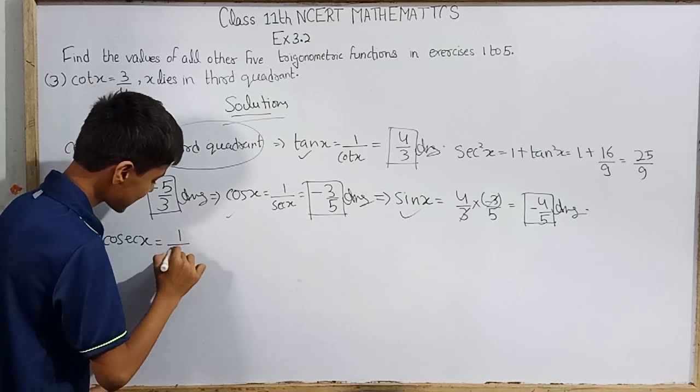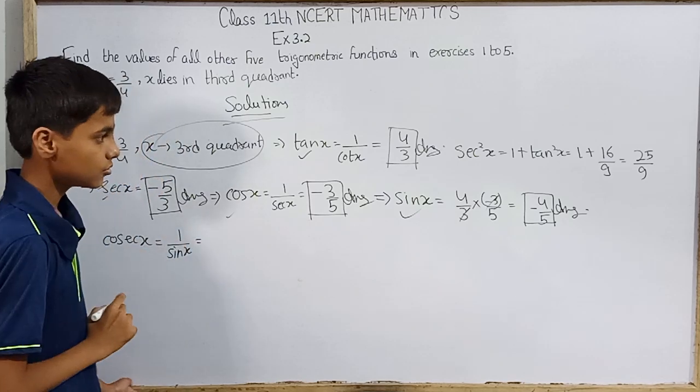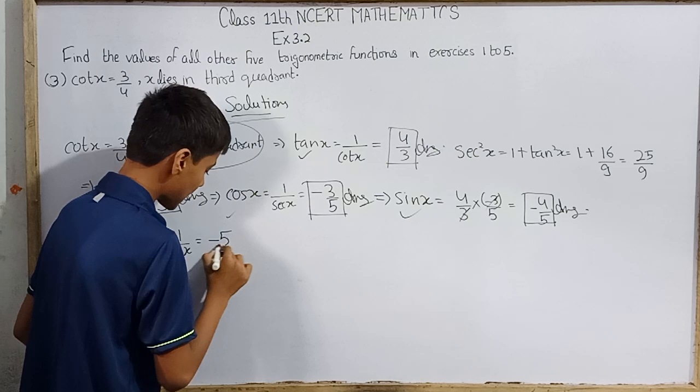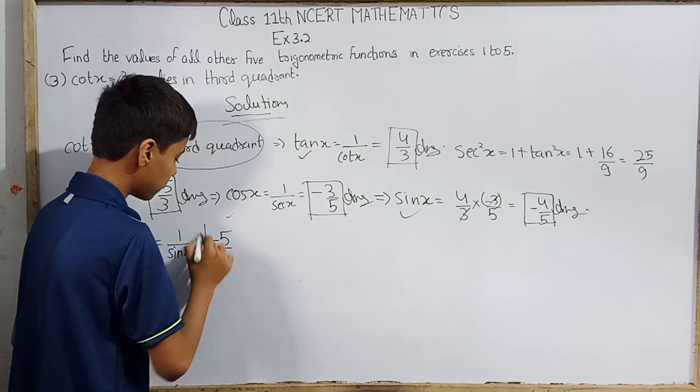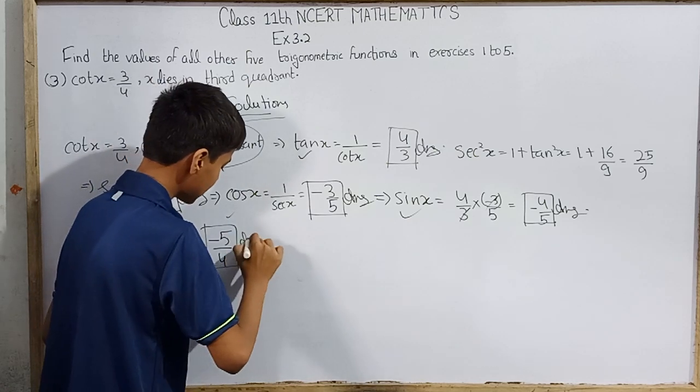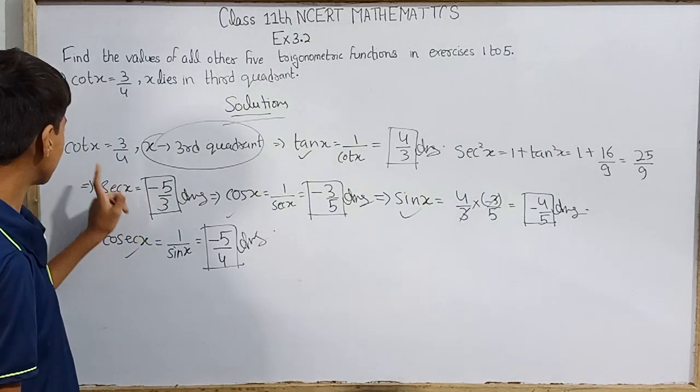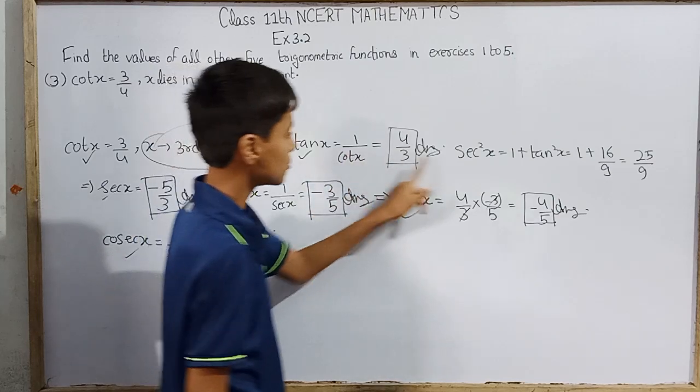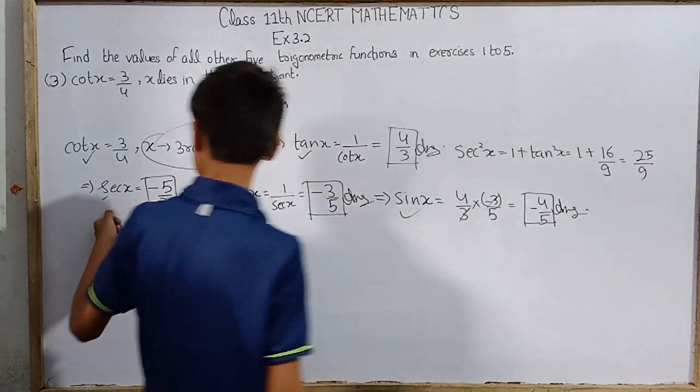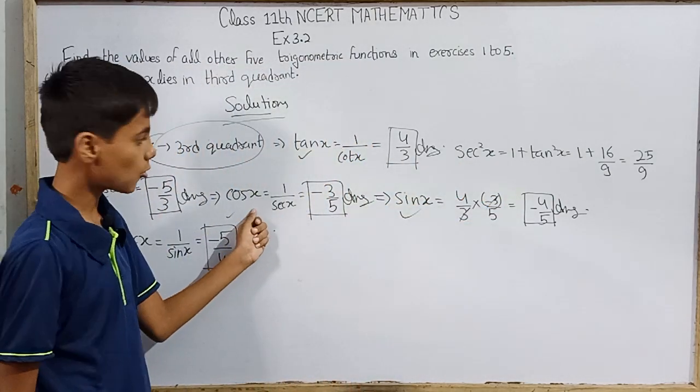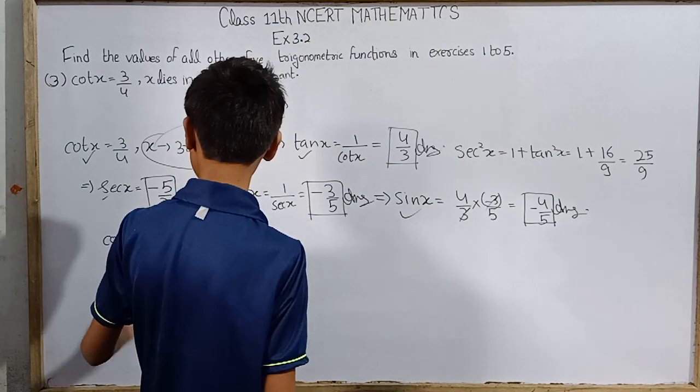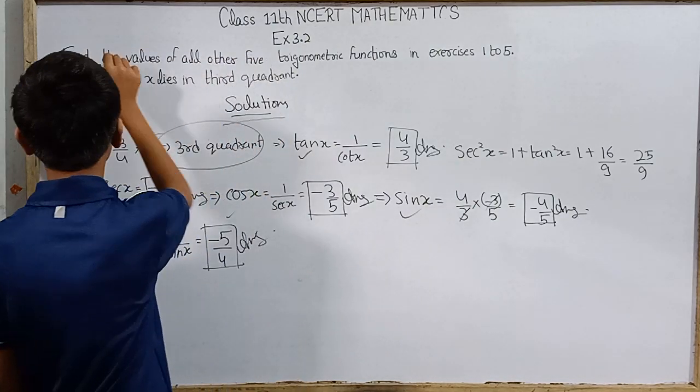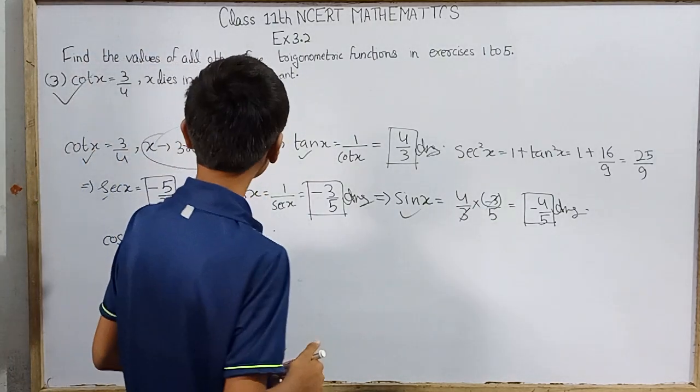Which is 1 over sin(x). So this function is minus 5/4. This is the cosecant value. And we have one left. How many do we know? This is cot(x), then tan(x), then we know sec(x), cos(x), sin(x), and finally cosecant. We have found all six trigonometric functions - one was already given, so we found the rest five.